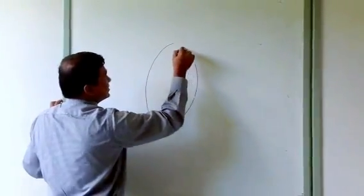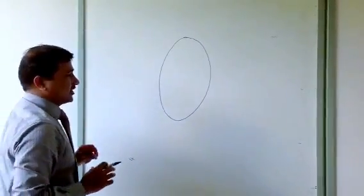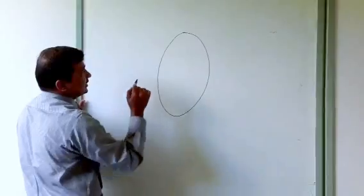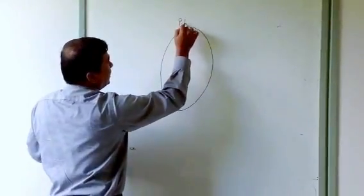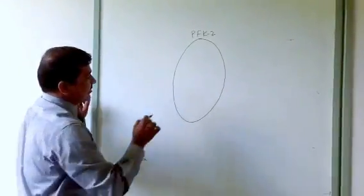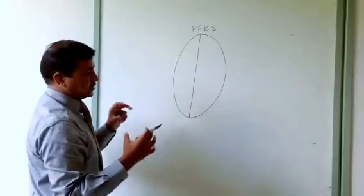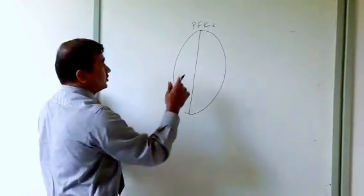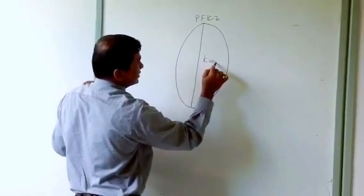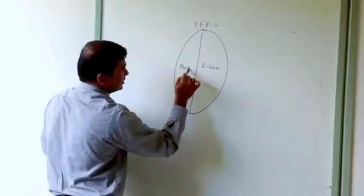We will understand how PFK1 and PFK2 are regulated and how they participate in the regulation of glycolysis. First, we will look at the phosphofructokinase 2 enzyme, PFK2. PFK2 is a bifunctional enzyme, meaning one enzyme has two functions. It has a kinase part and a phosphatase part.